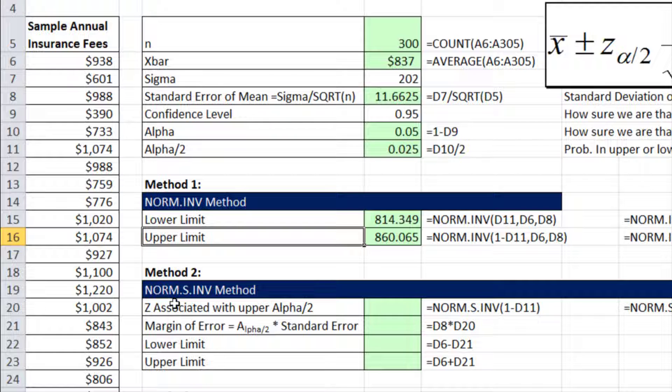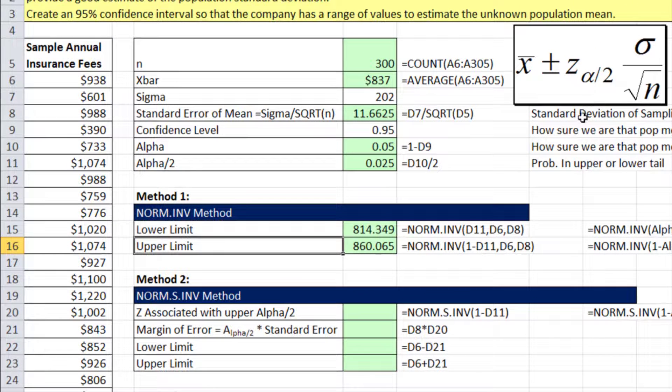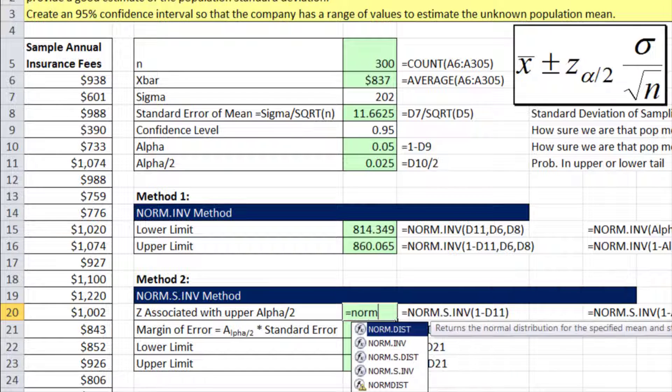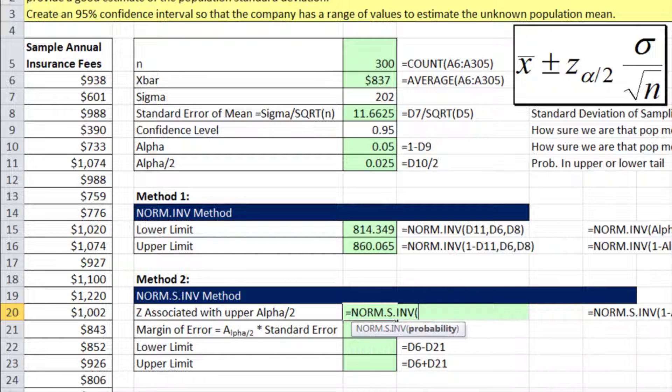Method number two, we'll do the NORM.S.INV method. That calculates the z. And given the fact that we already have standard error, we'll simply multiply them to get what's called margin of error. The z equals NORM.S.INV. This pops out z on the upper end, so I do 1 minus the α/2. That gives us our z. Now we can calculate our margin of error. Remember, what does z tell us? How many standard deviations above or below. We have our standard deviation up here. So we simply say z, number of standard deviations, times the standard deviation. That gives us the margin of error.